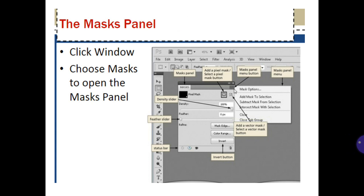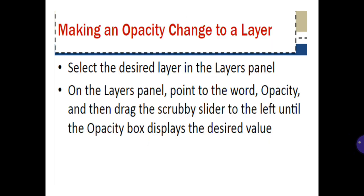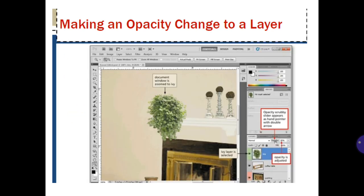The Masks panel: click Window and choose Masks to open the Masks panel. Making an Opacity change to a layer: select the desired layer in the Layers panel. On the Layers panel, point to the word Opacity and then drag the scrubby slider to the left until the Opacity box displays the desired value.